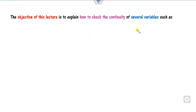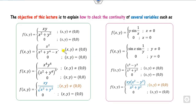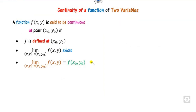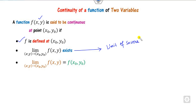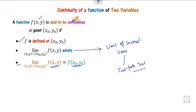The objective of this lecture is to explain how you can check the continuity of several variables like f(x, y). There is a simple definition: a function f(x, y) is said to be continuous if, first, it should be defined; second, the limit exists — which we discussed in the last class on limits of several variables using the two-path test; and third, the limit must equal the function value.